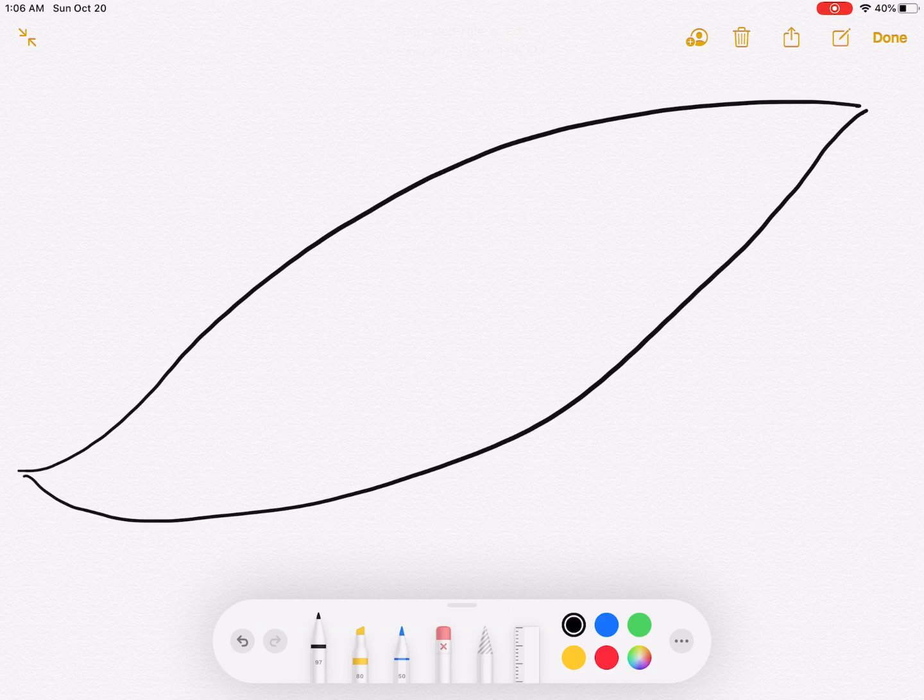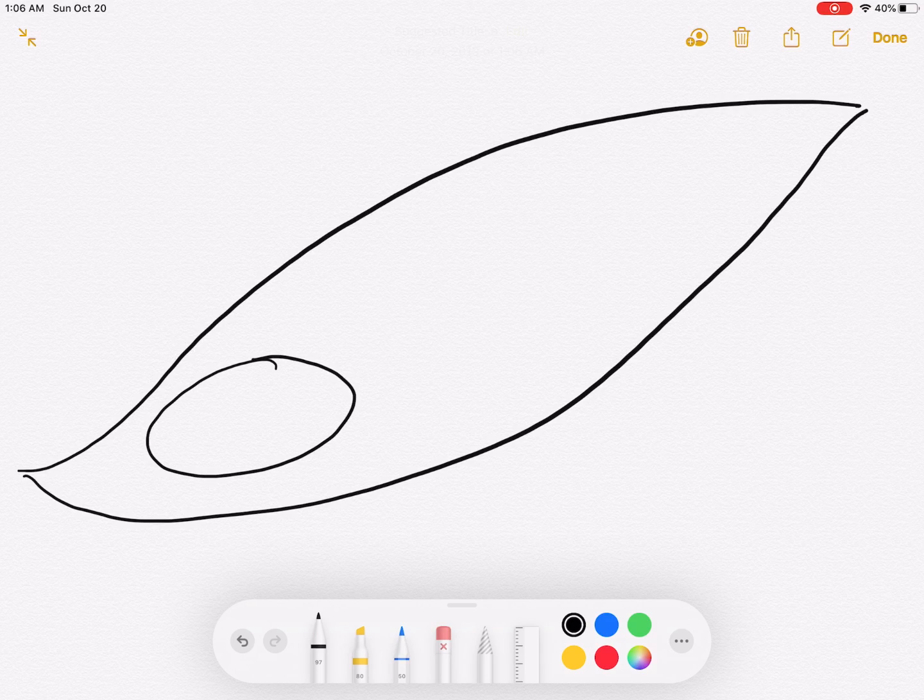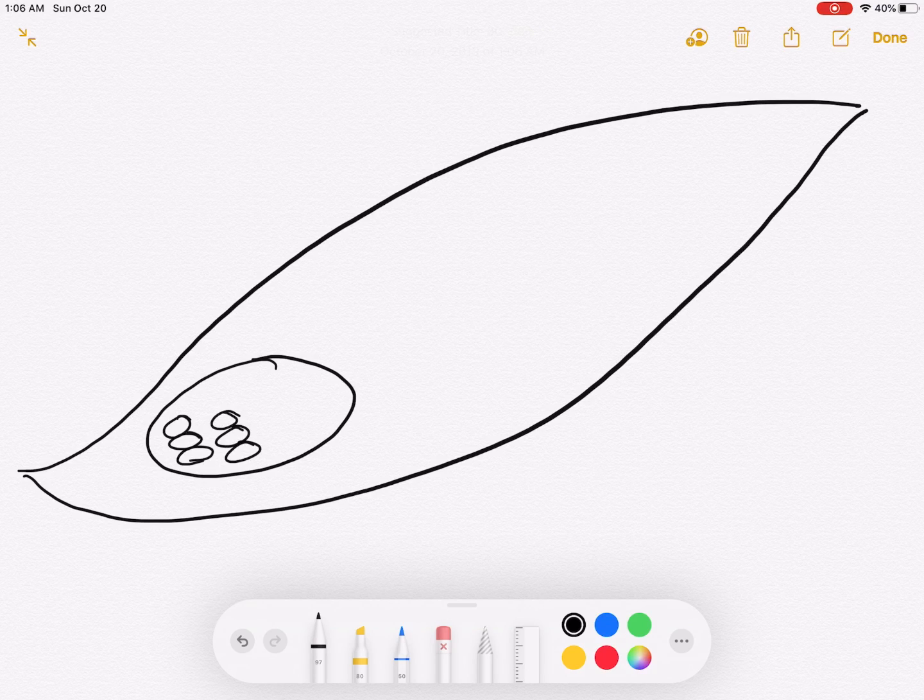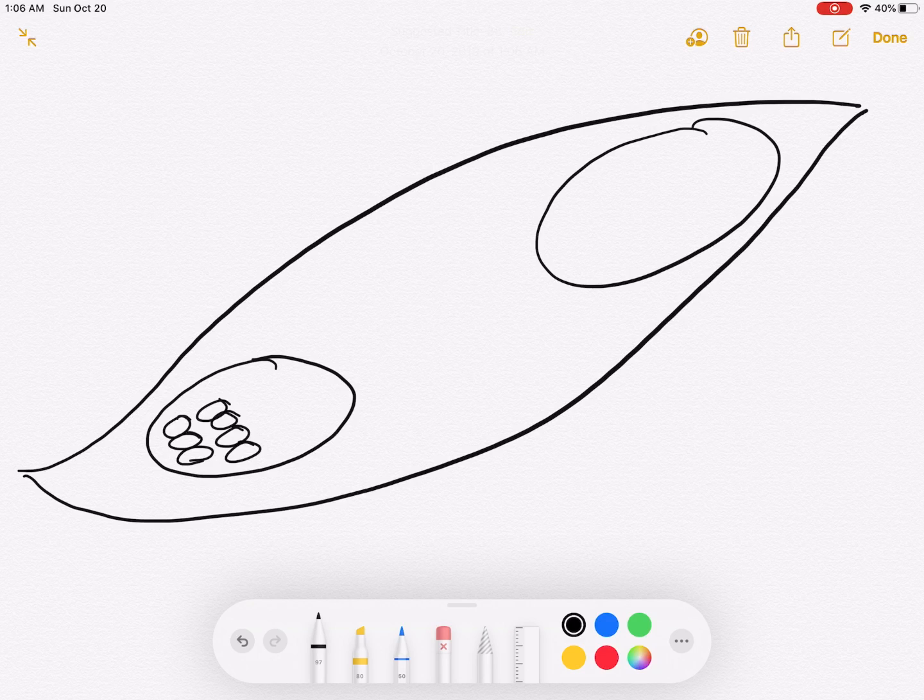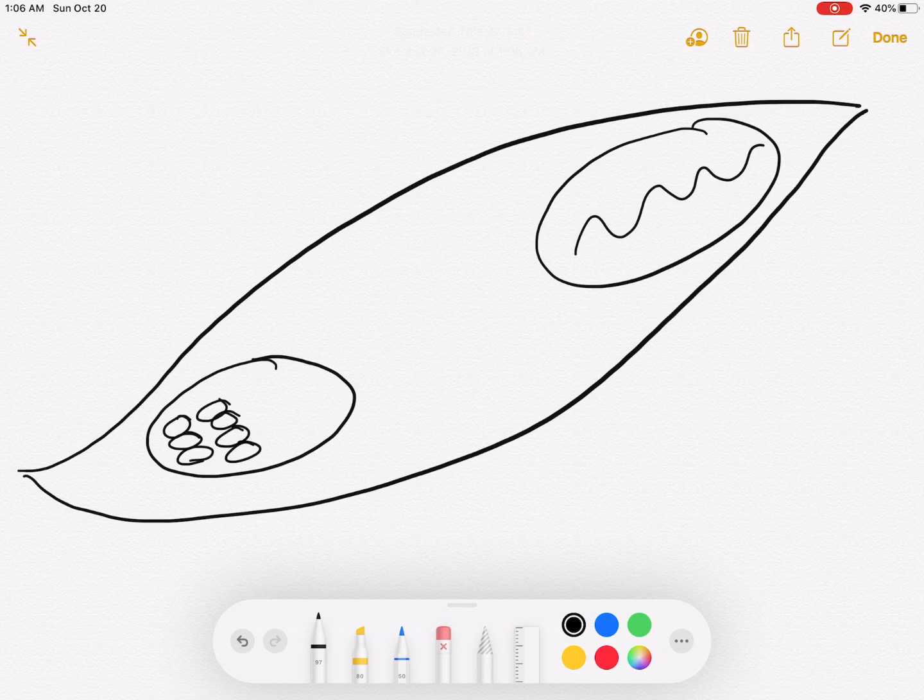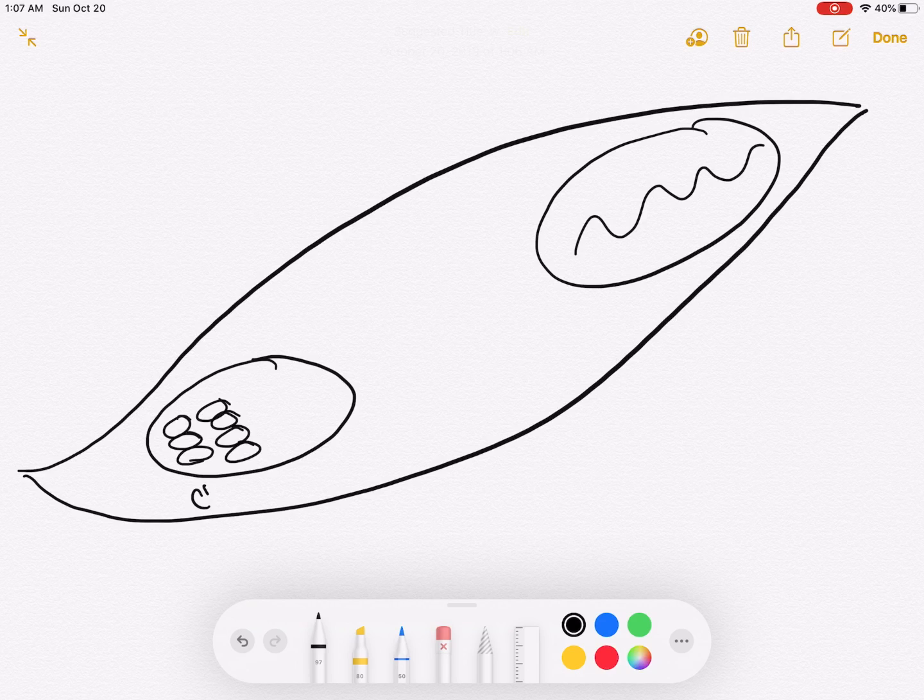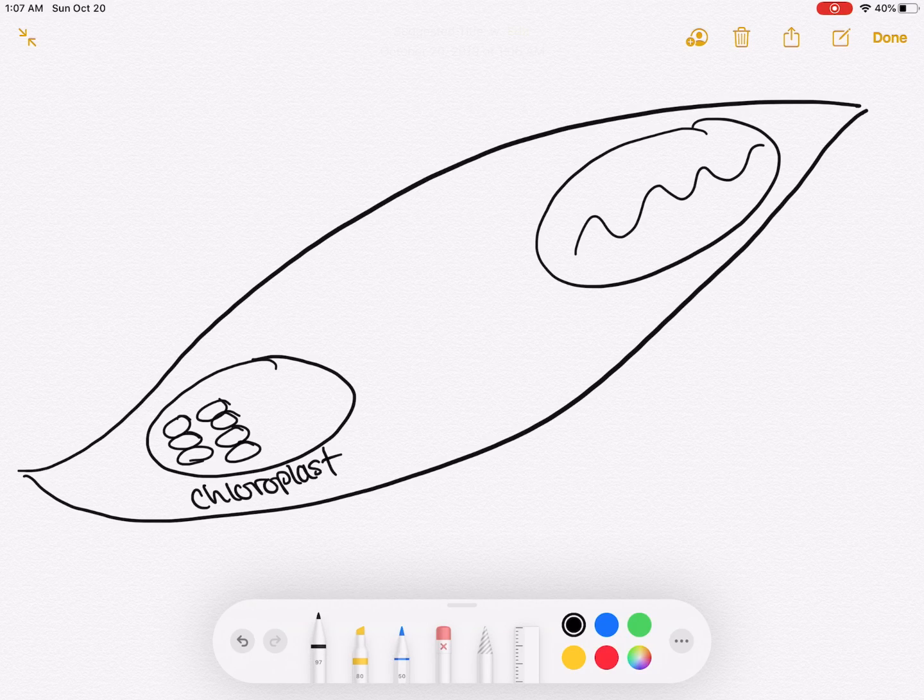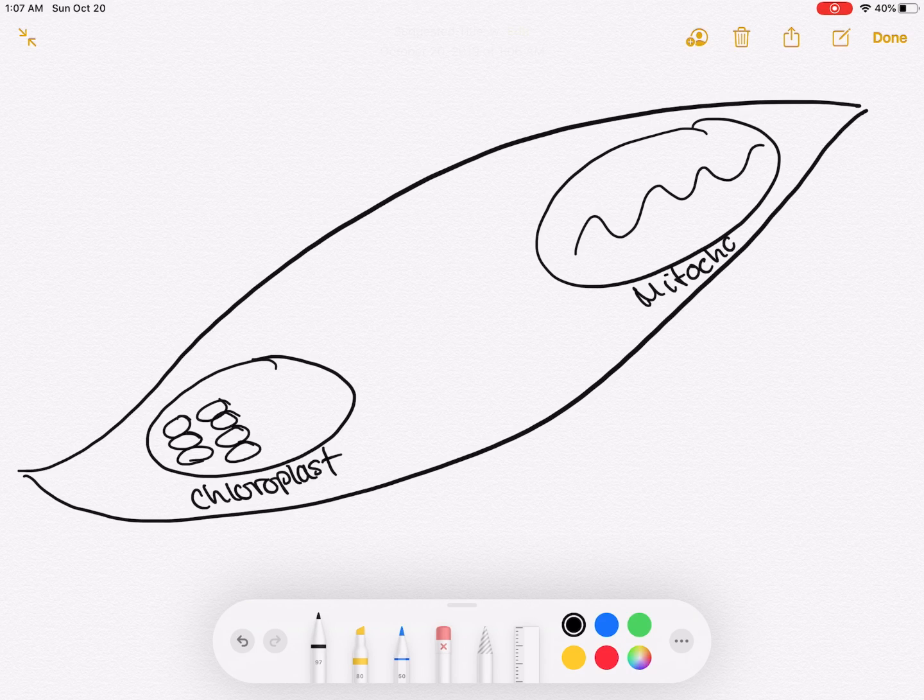So it says on opposite sides of the leaf, on one end you're going to draw a chloroplast. I'm going to put little thylakoid so it looks like a chloroplast. And then on the other side you're drawing a mitochondria. It says to label both. I'm just going to write chloroplast on one side, mitochondria on the other.